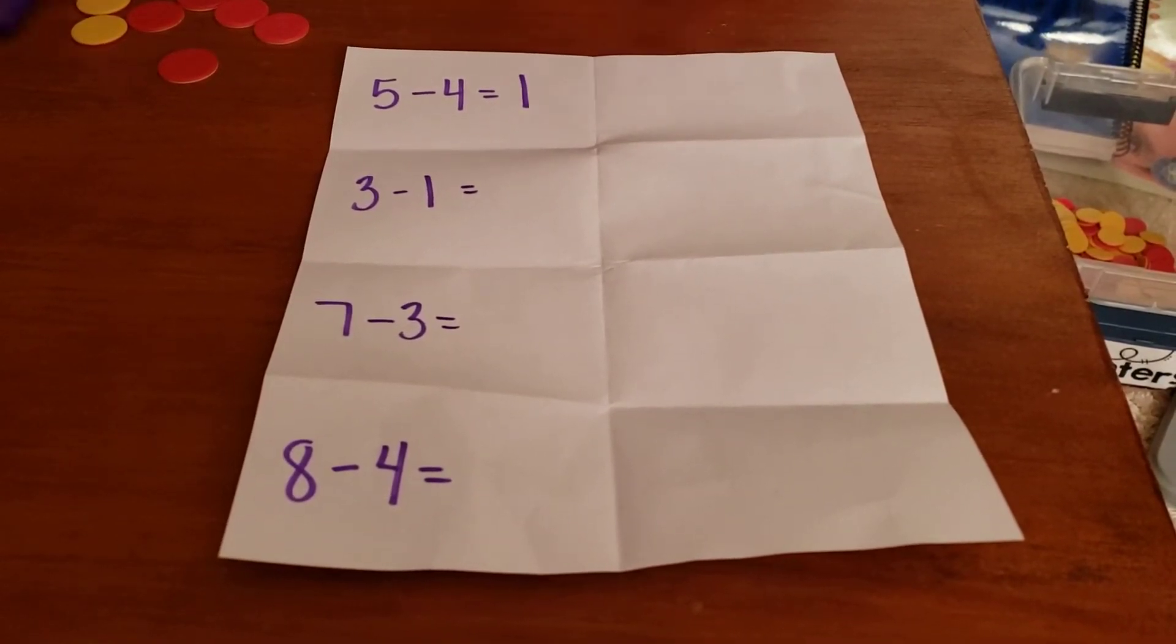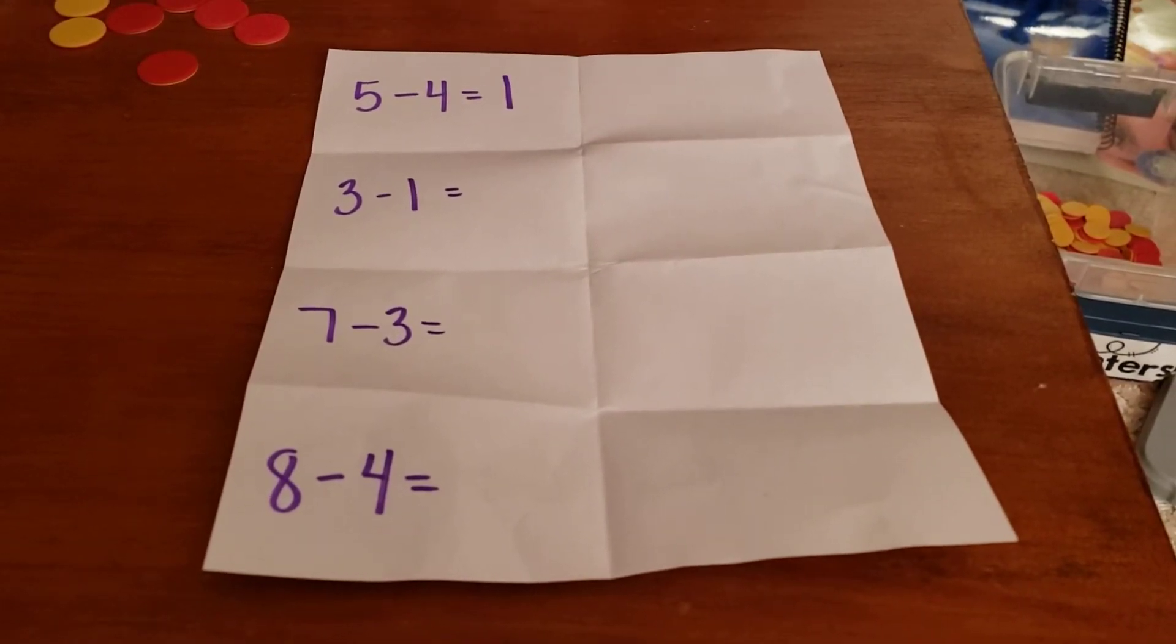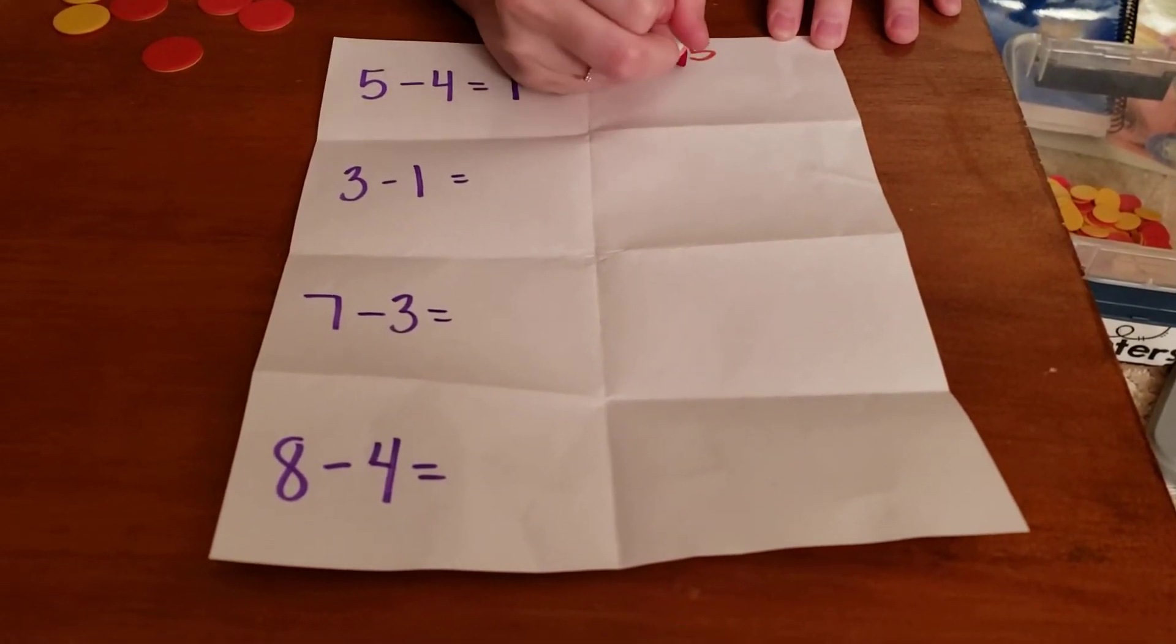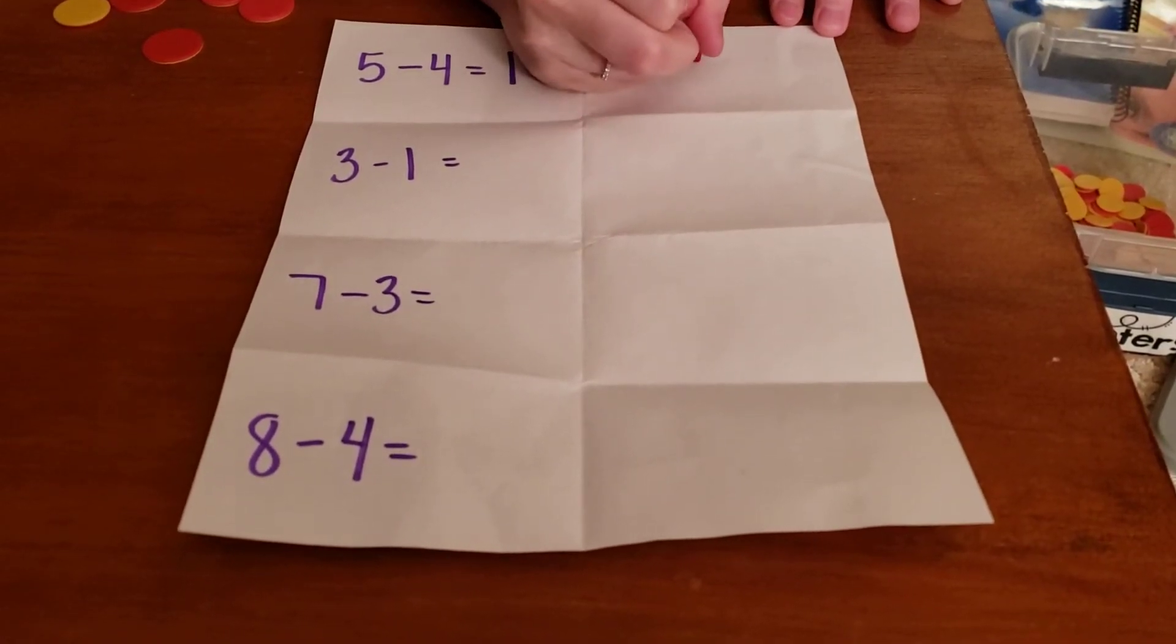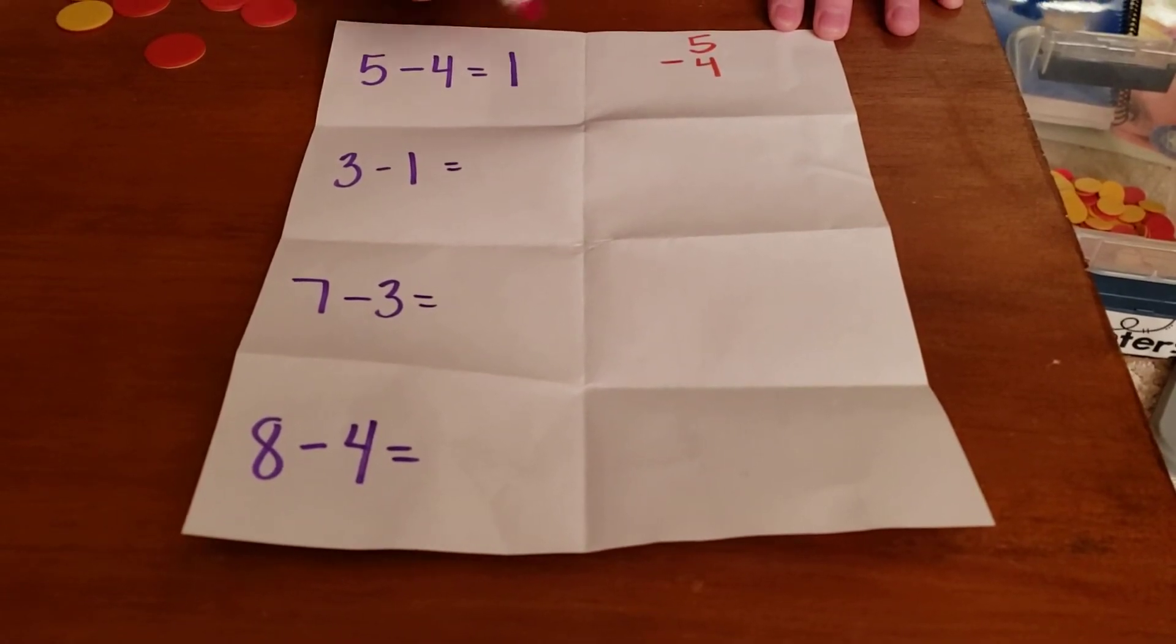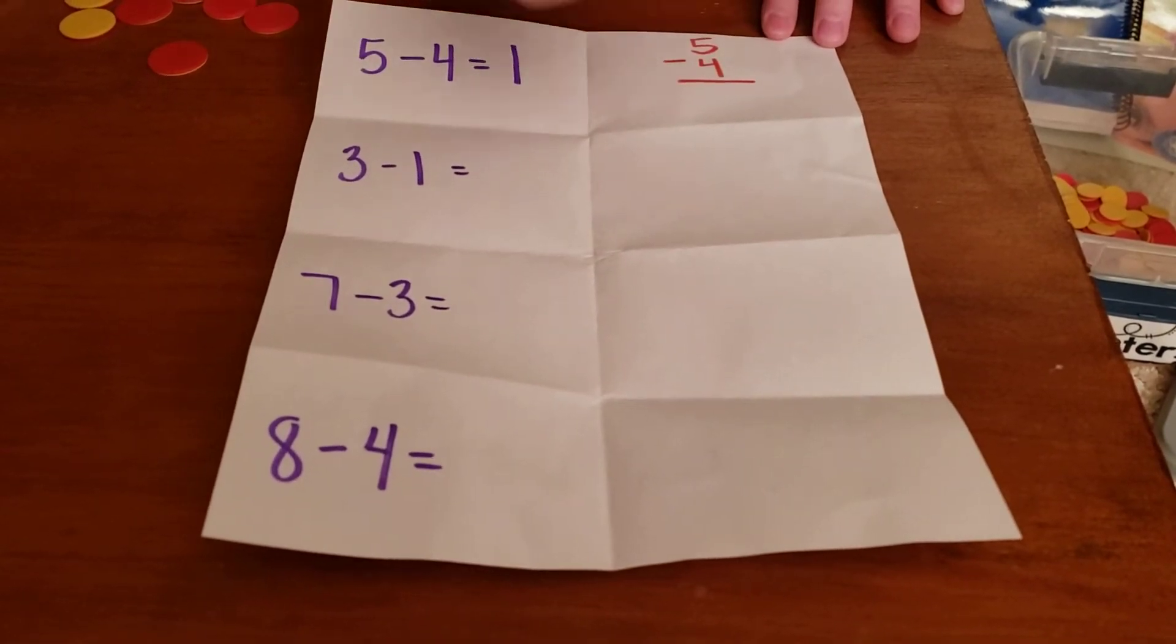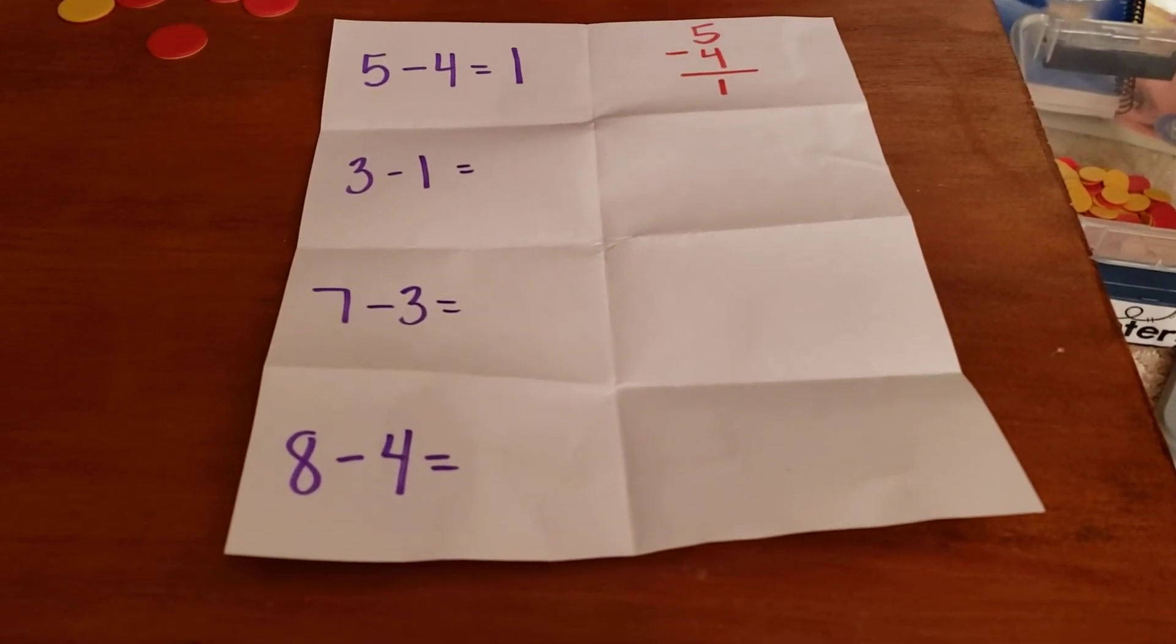All right, now we need to write five minus four equals one in a vertical number sentence or up and down. So first at the top, I'm going to write my five. I need to write a little minus sign over on the side. Scooch it over to the side so you can have space to write the four. Then I need to write an equal sign. Do I write an equal sign like that when I do it vertical? No. Just a straight line. And then it equals one. See how all of my numbers are in a straight line? Does yours look like mine?